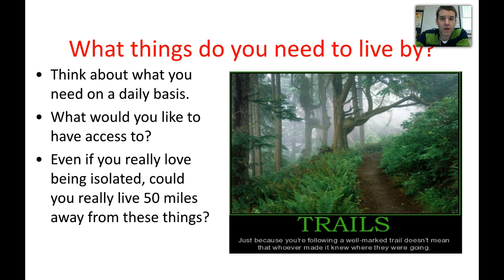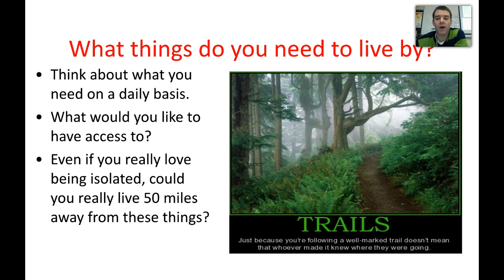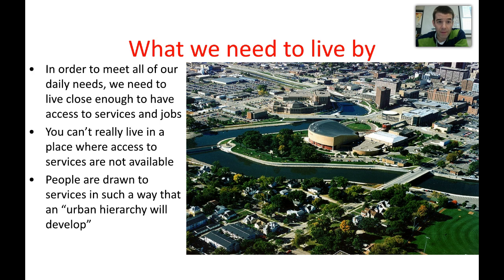When we looked at services, we thought about what things are provided for us that people pay for. When we think about our daily needs, it's going to largely define what kinds of services we want near us. When we think about things within our accessible daily range — say 50 miles — would you want to be isolated from the services you use most? Applied to an entire population, access to services becomes very important, and we start to see a natural process of what's called an urban hierarchy that begins to develop.